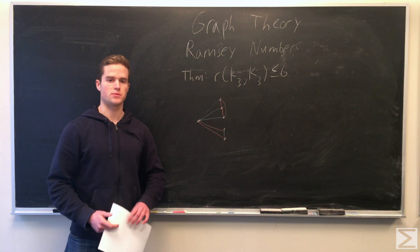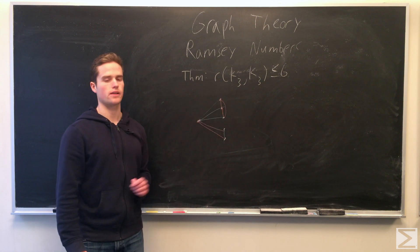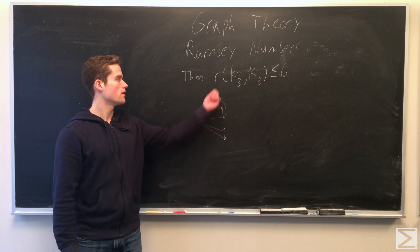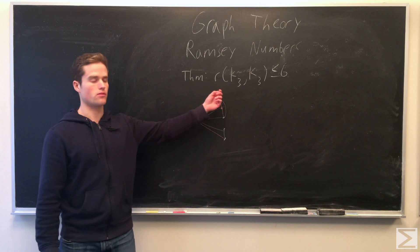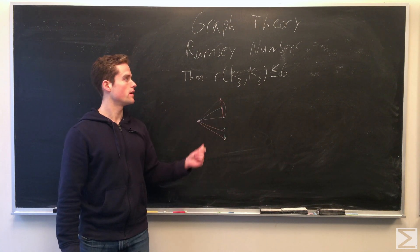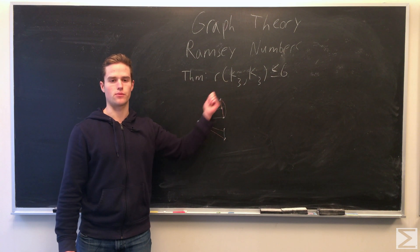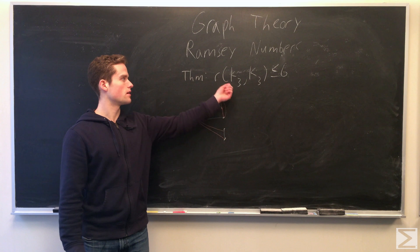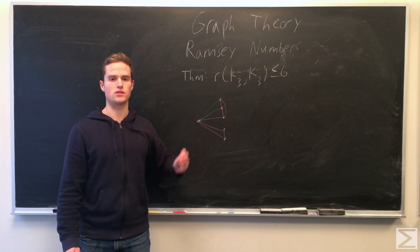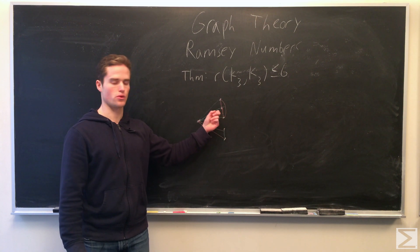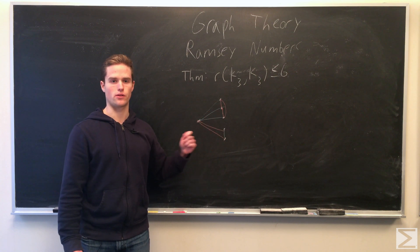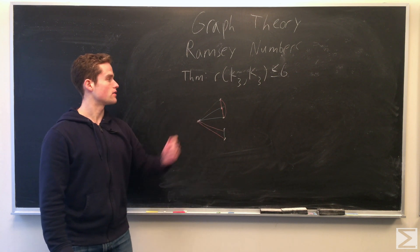So one quick explicit Ramsey number we can calculate, or we can calculate a pretty low bound. R(k_3, k_3), k_3 is just a triangle, is less than or equal to 6. So we're going to prove any graph with 6 or more vertices, if we color the edges blue or red, we're going to find a triangle, either a red or a blue triangle.